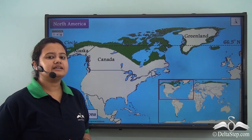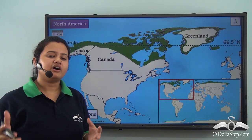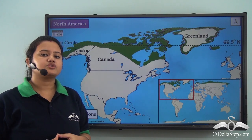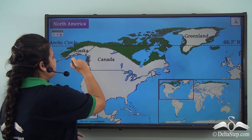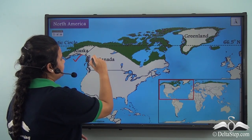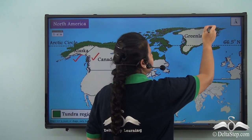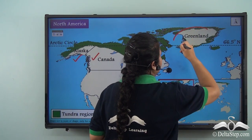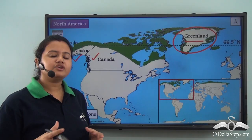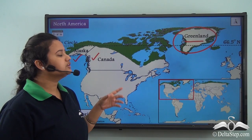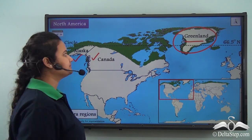Tundra region is found in the northern coast of some North American countries like Alaska and Canada, and this biome exists in the entire coastal margins of Greenland. So Tundra biome exists in the northern coastal fringes of these three countries.